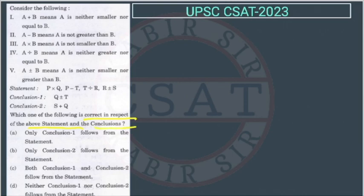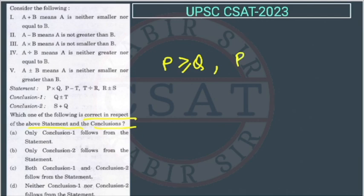Let's draw the statements first. The first statement is P into Q — 'into' means 'not smaller than,' so P is greater than or equal to Q. The second statement is P minus T — 'minus' means 'not greater,' so P is less than or equal to T. There are only three possibilities: equal, greater, or smaller.